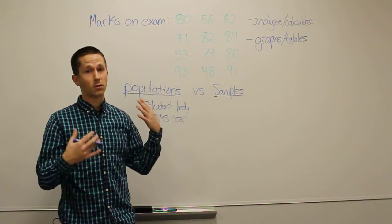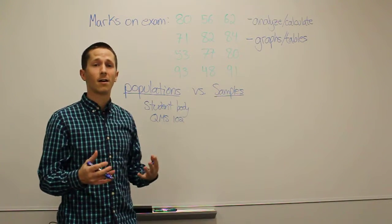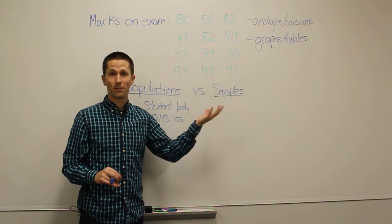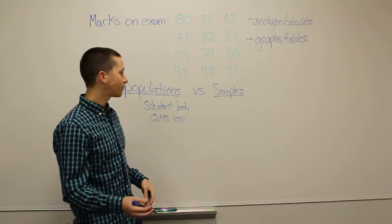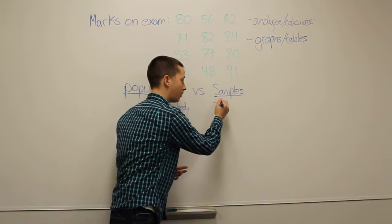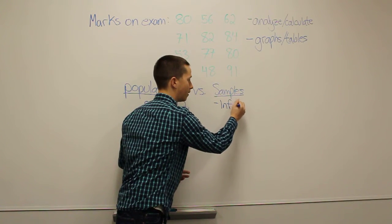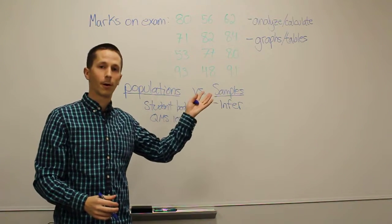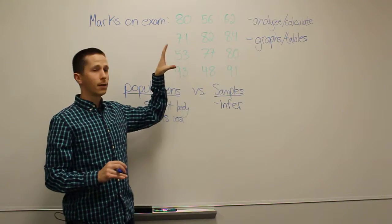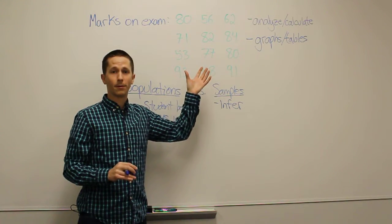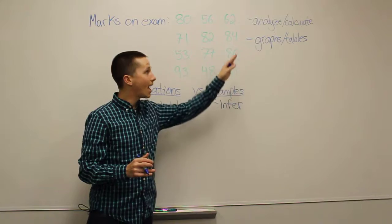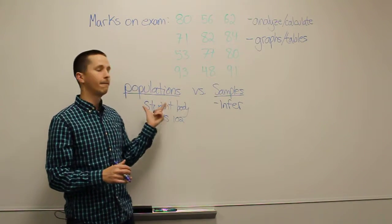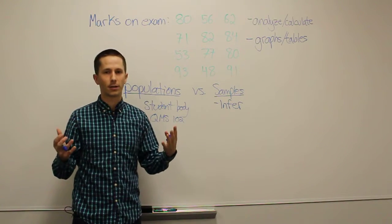This is a sample right here, just 12 students from your class getting their mark. The reason we do that is because obviously it's much easier to survey 12 people than it is thousands. And then we can do things like infer information about the overall population from our sample. So we survey a small group of people, collect their data, analyze it, and then eventually we can infer information about the overall population. That's what we're trying to do.